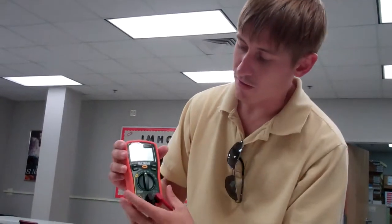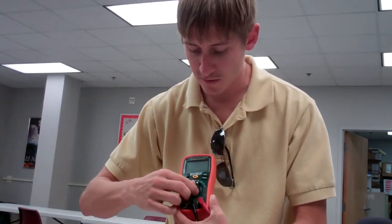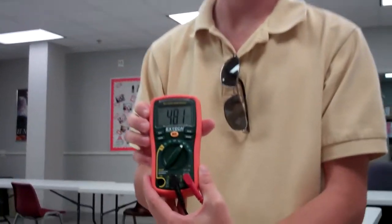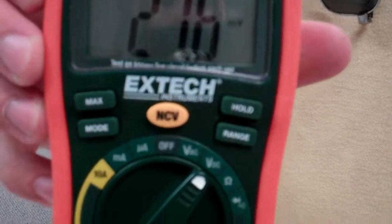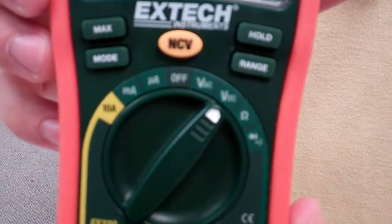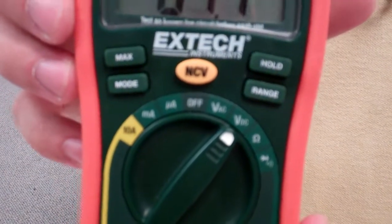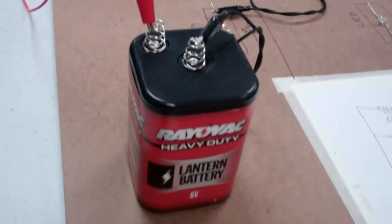In order to turn it on, I'll switch the dial to voltage DC. The reason we are choosing DC is because our circuit will be using direct current from a 6-volt battery, therefore voltage DC.